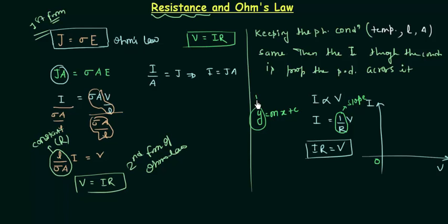Y is my current I, x is my potential difference V, and m is my slope which is 1 by R. And 1 by R is a constant thing, it is not changing. So we are having a straight line like this. And the slope can be calculated by this angle theta, so 1 by R is equal to tan theta.